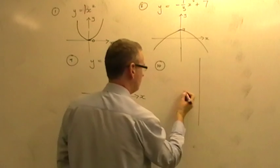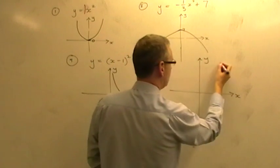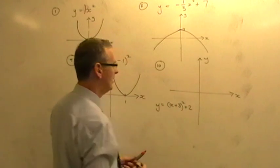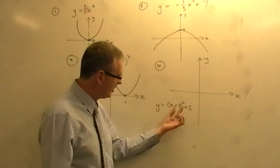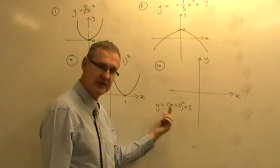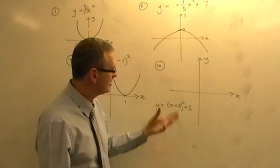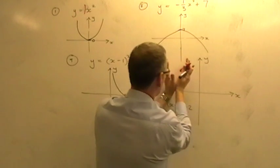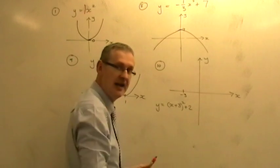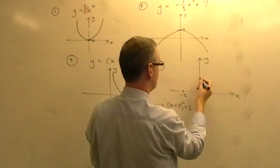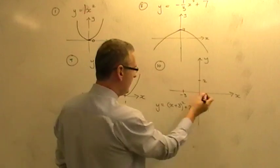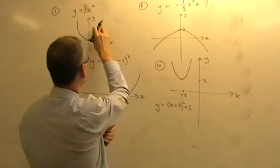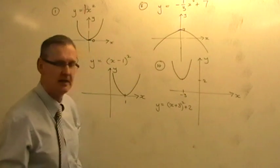Number ten: y equals x plus three, all squared, plus two. It's a quadratic and a u-shape because there's no minus in front. The plus three inside the bracket means the u-shape moves three places left, so you indicate minus three on the x-axis. The plus two on the end controls vertical motion, moving things up two on the y-axis. The intersection of those two points is where the u-shape starts — moved three left and two up.